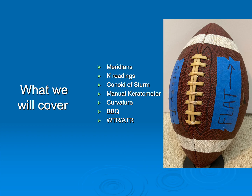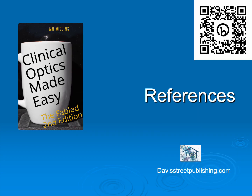In today's talk, we're going to be discussing keratometry readings, the conoid of Sturm. We're going to look at a manual keratometer that's almost 100 years old, and we're going to discuss barbecue, which is very dear to my heart. And if we have time, we're going to discuss with the rule and against the rule astigmatism. All of the material I'm presenting is available in Clinical Optics Made Easy, but find an optics book that is right for you. The real key to learning optics is working lots and lots of problems — that book has over 800 questions.